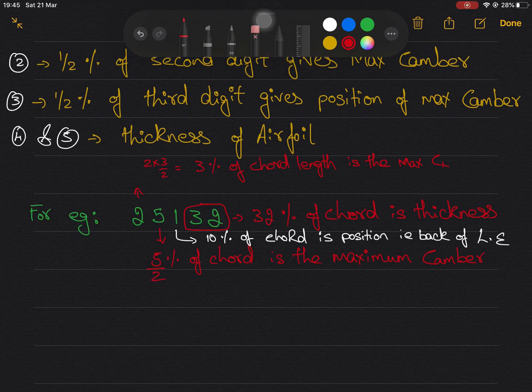Once again let's have another example: NACA 25132, in which last two digits give the percentage chord of thickness of airfoil. Two times three by two, that is 3 percent of chord is the maximum lift coefficient. Five half of chord will be maximum camber. One half of chord will be position of maximum camber back of the leading edge in tenths, that is ten by two.